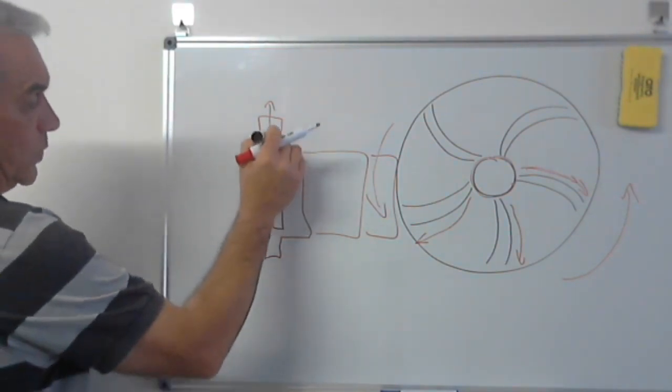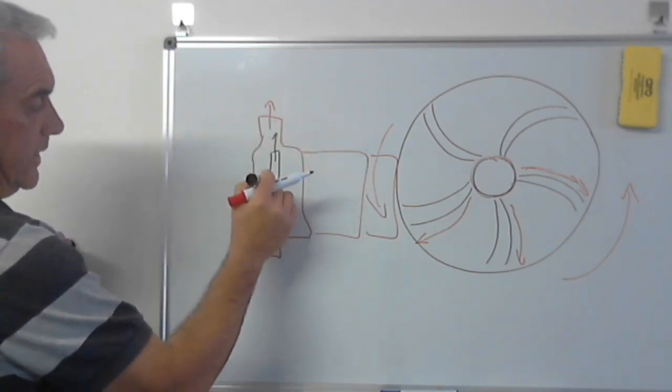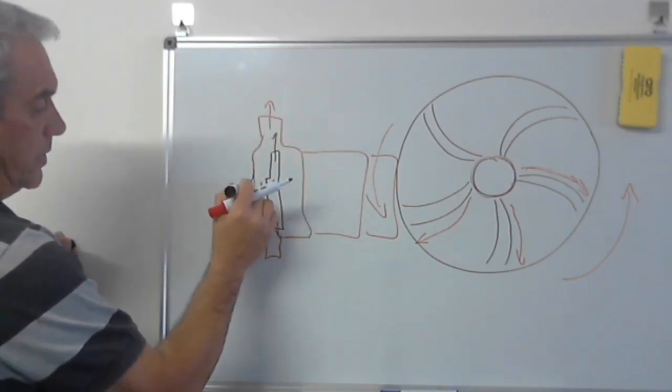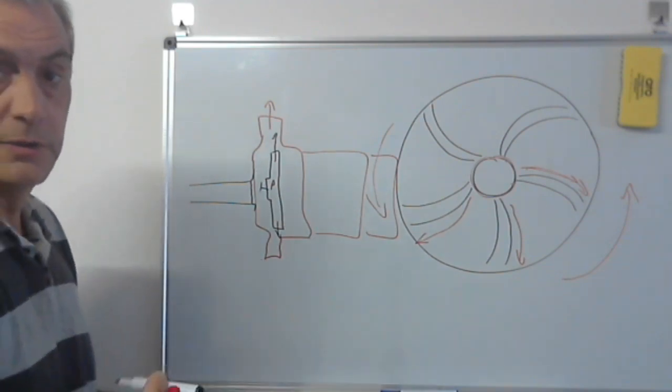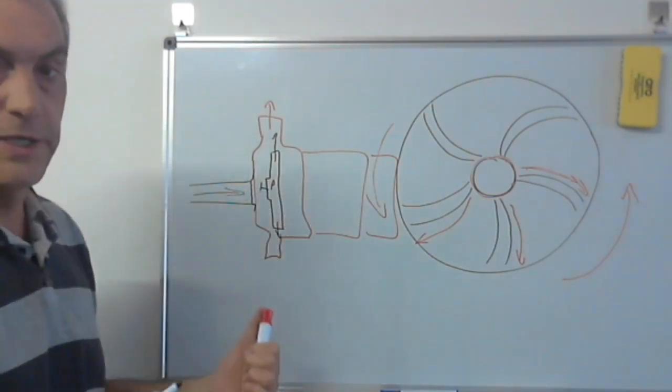So by throwing the water out in that direction, you're creating a low pressure zone here. And remember, this is where your pipework is attached. So at the eye of the impeller, here is where you are creating the low pressure zone. And that's what forces the water to move in that direction, plain and simple.